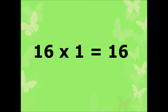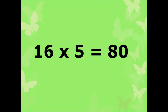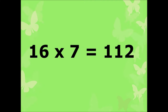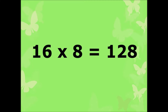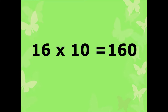16 ones are 16, 16 twos are 32, 16 threes are 48, 16 fours are 64, 16 fives are 80, 16 sixes are 96, 16 sevens are 112, 16 eights are 128, 16 nines are 144, 16 tens are 160.